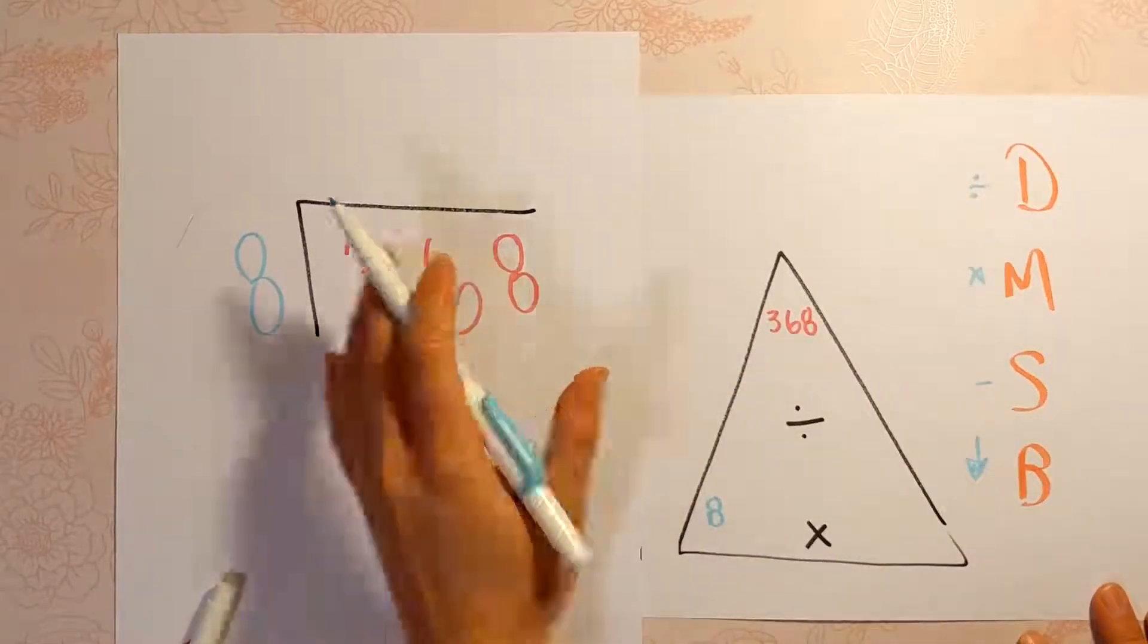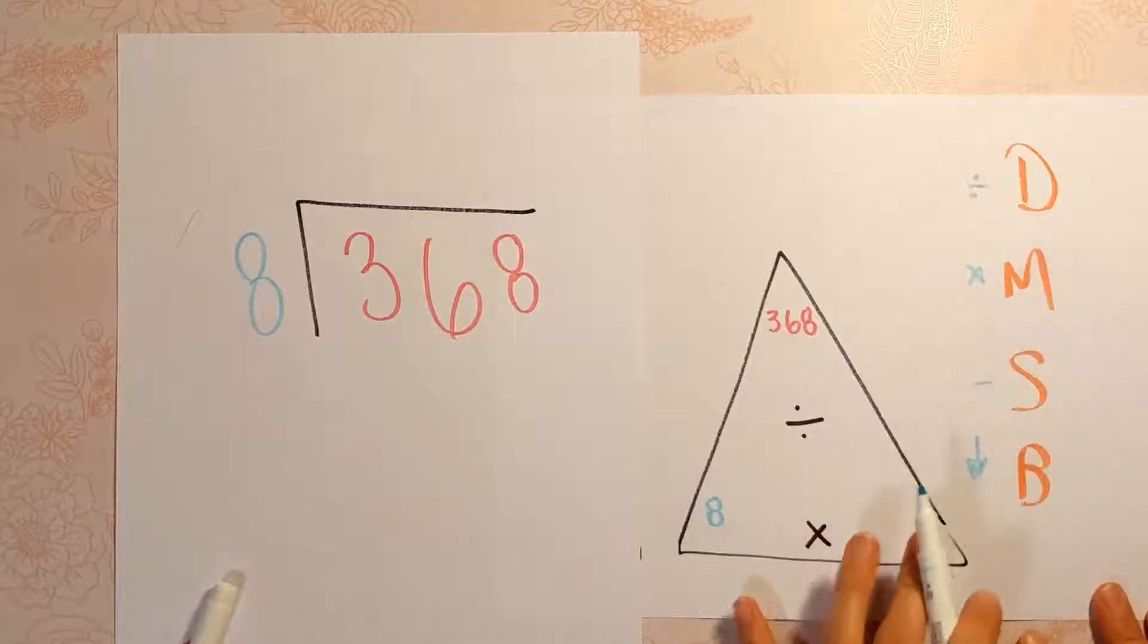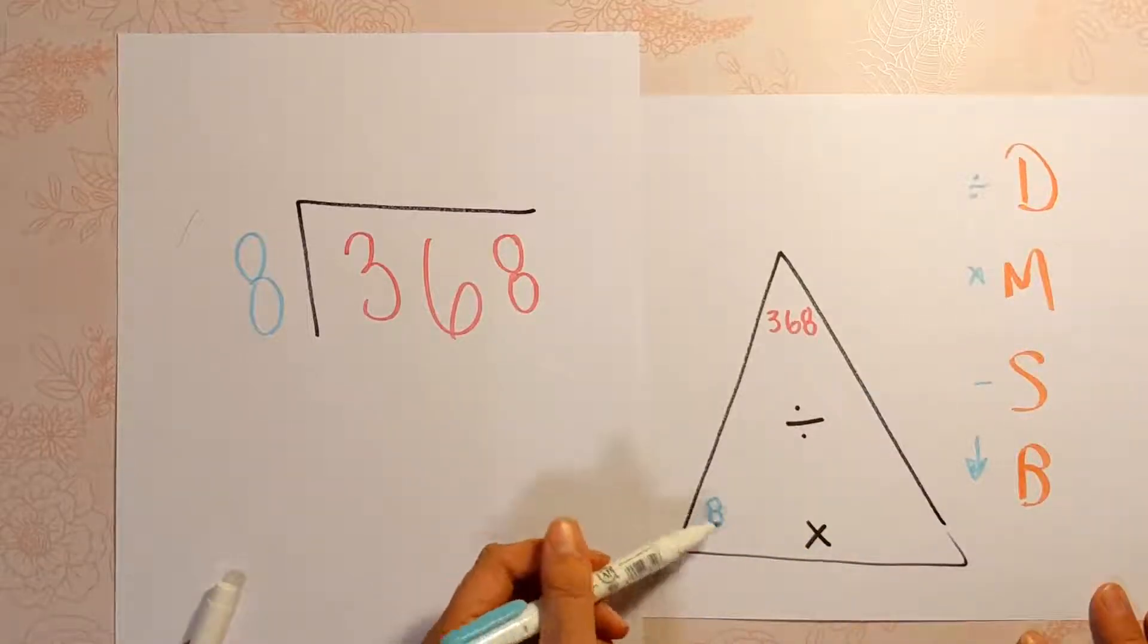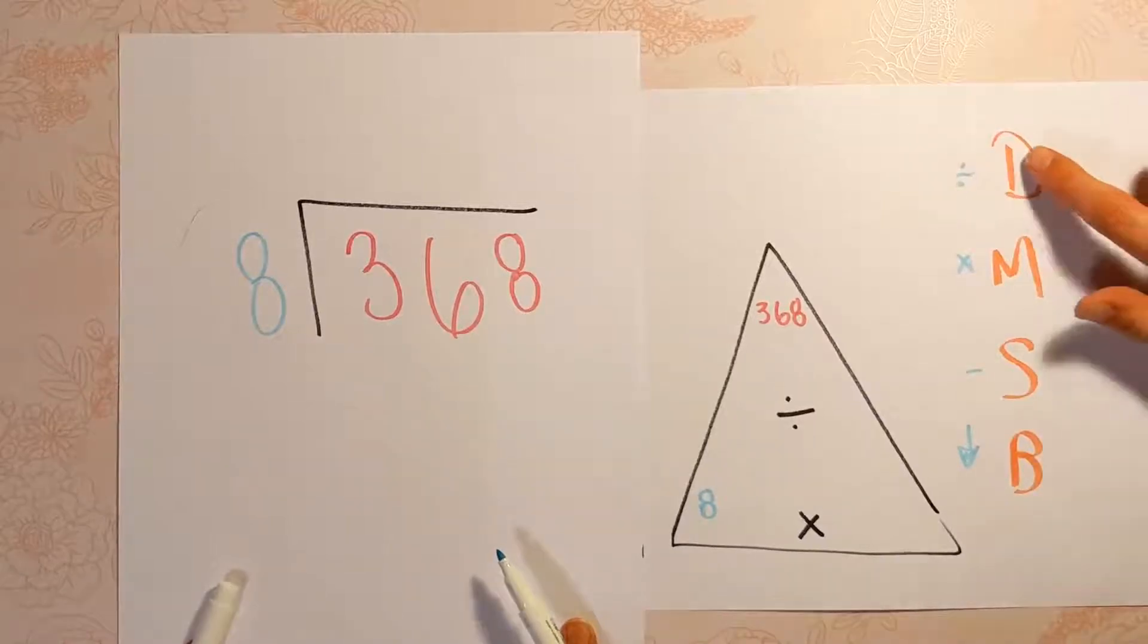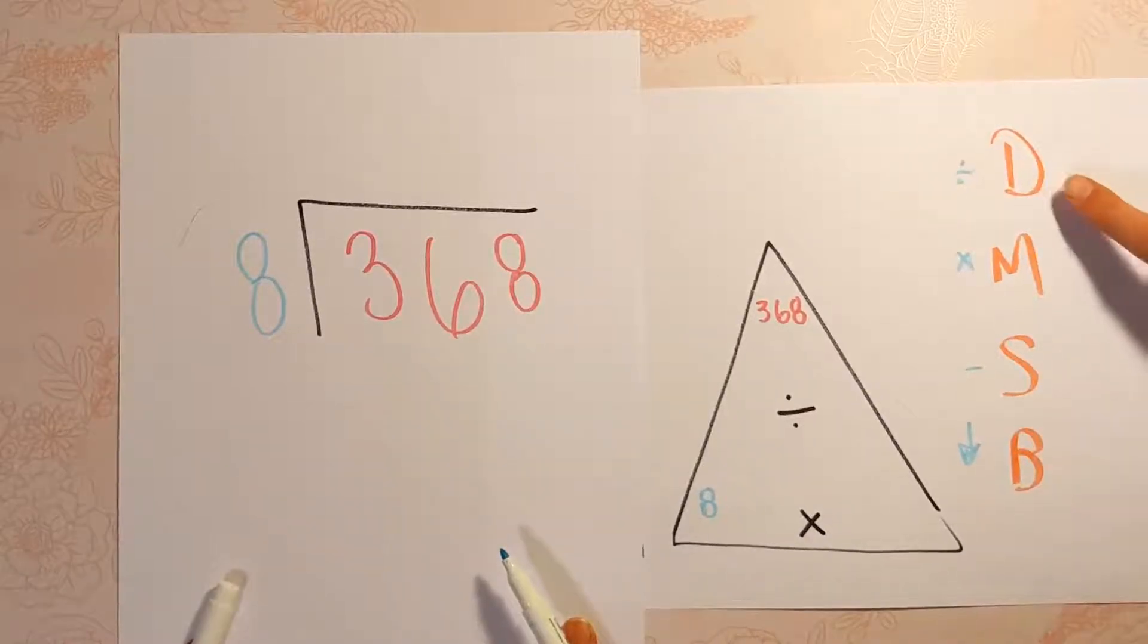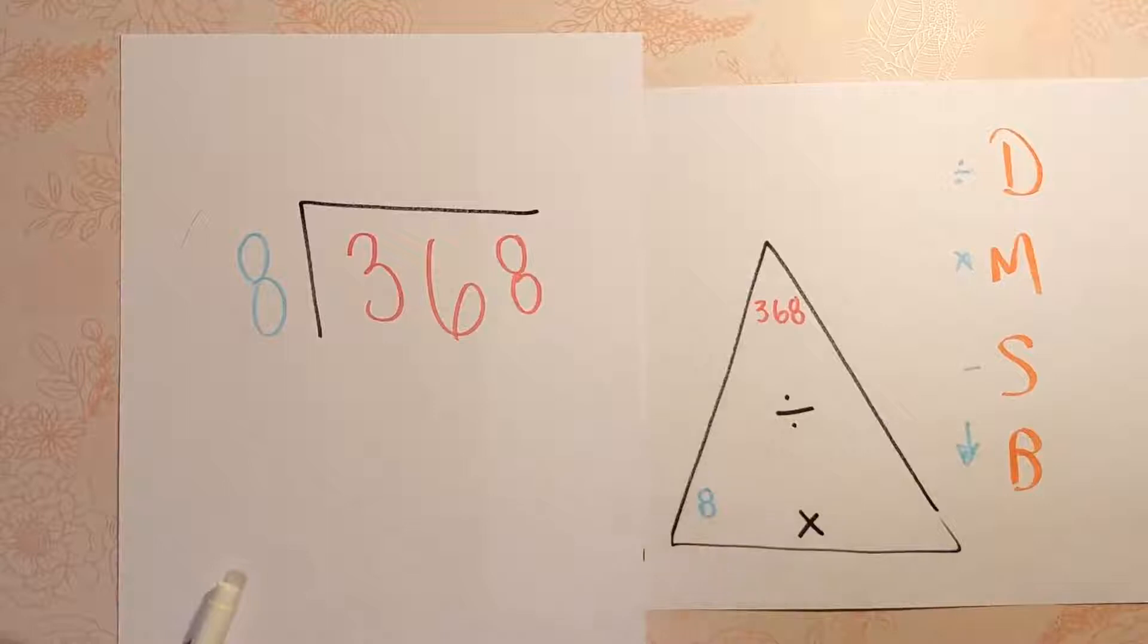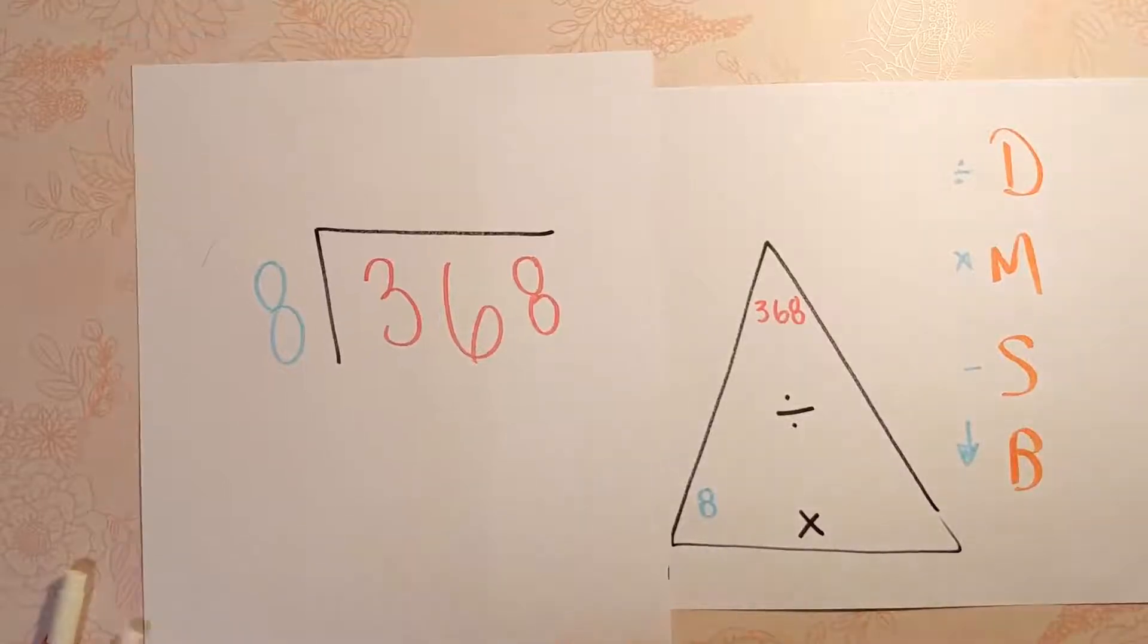And that's why when we do the standard algorithm, we do some dividing, but we're also multiplying back to see how close we're getting up to that number. Here are our steps: divide, multiply, subtract, bring down. Does McDonald's sell burgers? That's how I remember it. And we're going to go ahead and get started.